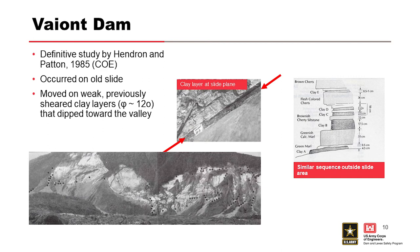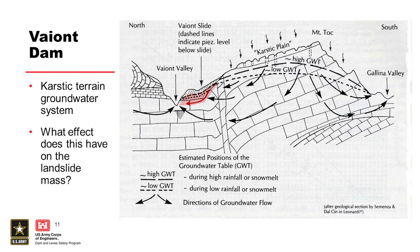After this, a definitive study by Hendron and Patton was done in 1985. They came to the conclusion that this occurred on an old slide, and it moved on a weak previously sheared clay layer with a friction angle of about 12 degrees that dipped towards the valley. You can see the sheared layer on the right. Hendron and Patton did studies outside the slide area but confirmed a similar geologic sequence in the reservoir area. The kicker was the groundwater system in combination with the geology — on the karstic terrain they had a lot of inflow and infiltration. When they raised the reservoir, it changed the groundwater conditions of the whole left abutment, with some unintended consequences.